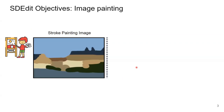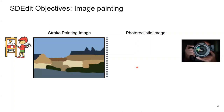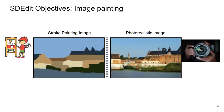Let's have an example of a kid or someone who is not good at painting, and he wants to have a photorealistic image given only a stroke painting image. Utilizing generative models, we can generate photorealistic images given only a stroke painting image, and this is the first objective of SDEdit.